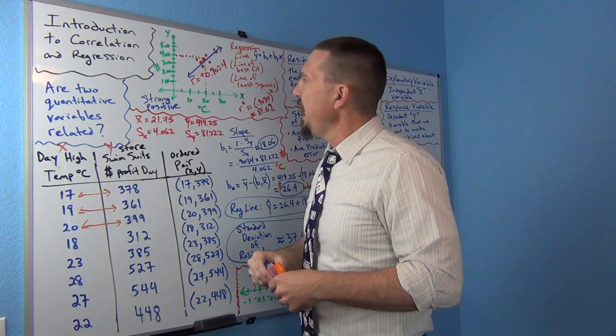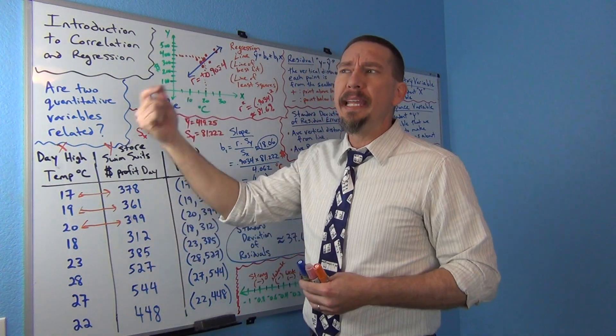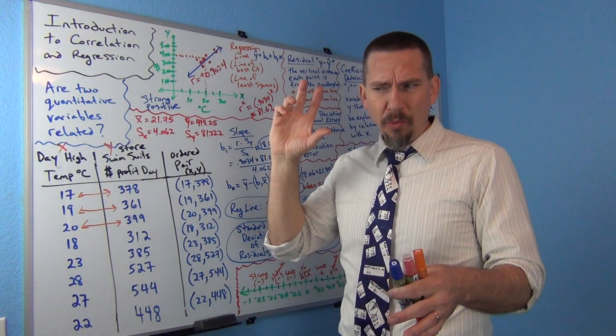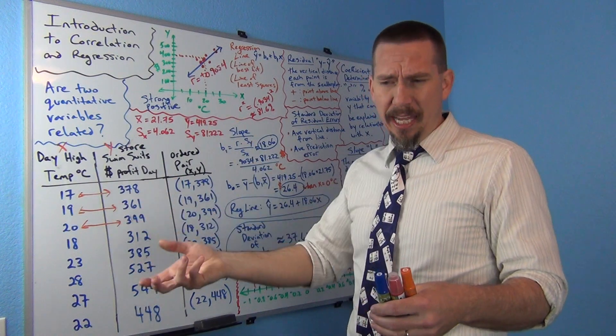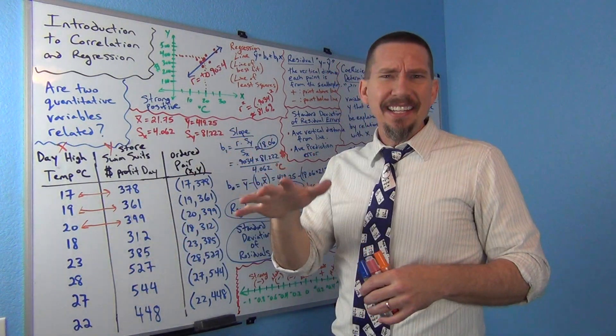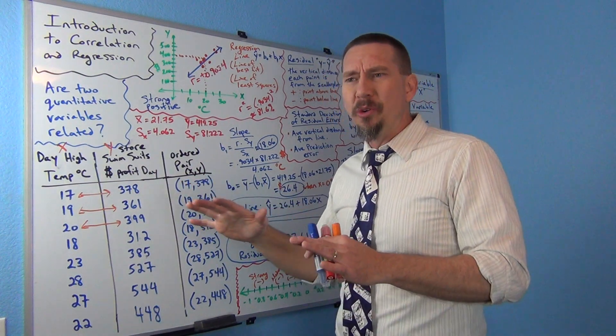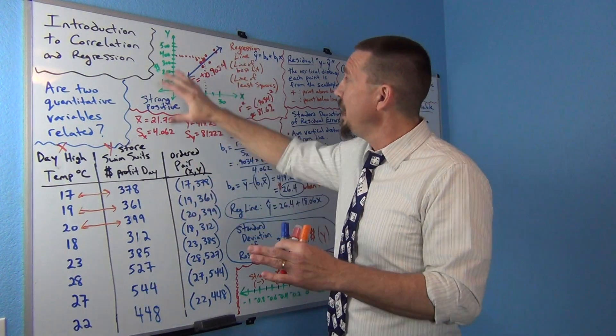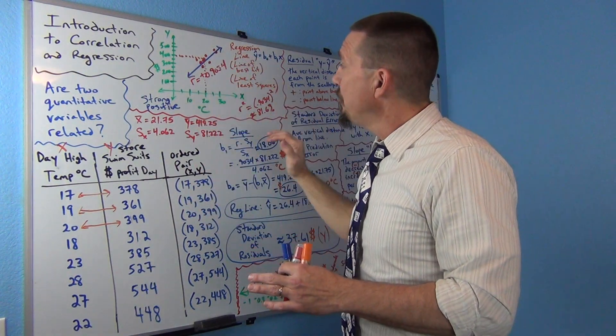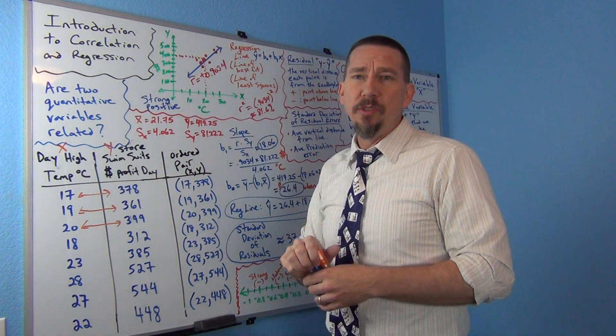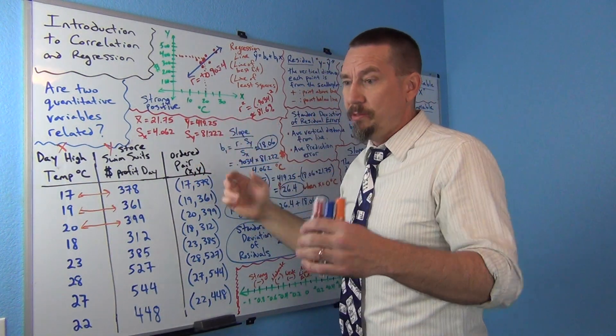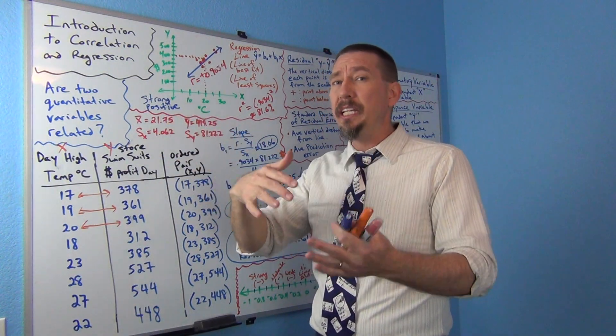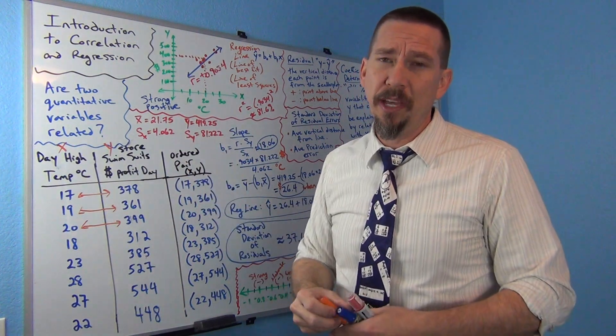Sometimes you will hear people say a strong positive correlation. A lot of people out in the world use the word correlation like a relationship or an association. A lot of statisticians kind of frown on that a little bit. Correlation is more of a number, a statistic that gets calculated to determine if there's a relationship. But some people do say strong positive correlation, right? I kind of lean more towards is there a linear relationship or a linear association, just using a little bit better terminology.